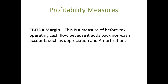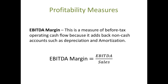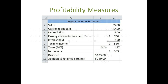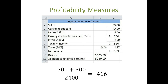The EBITDA Margin is calculated as Earnings Before Interest, Tax, Depreciation and Amortization divided by sales. In our example, we have $1 million in EBITDA and $2.4 million in total sales. This gives us an EBITDA margin of 0.4166.